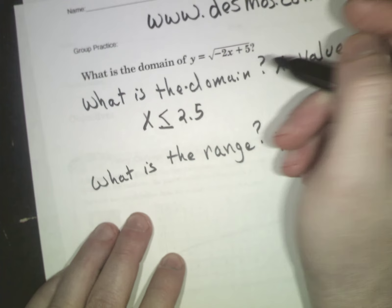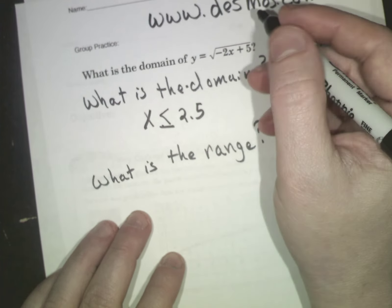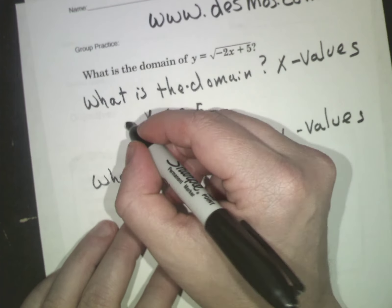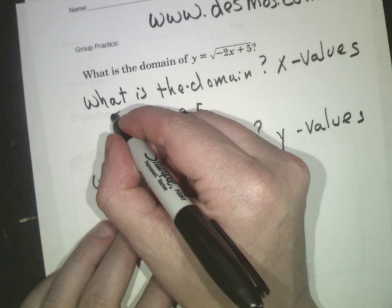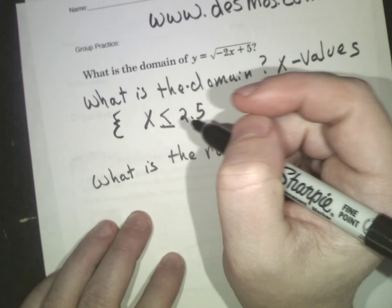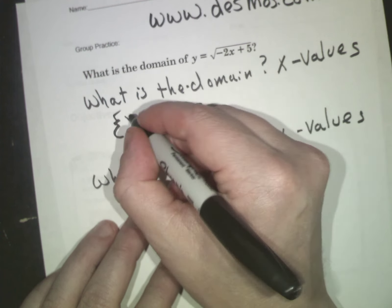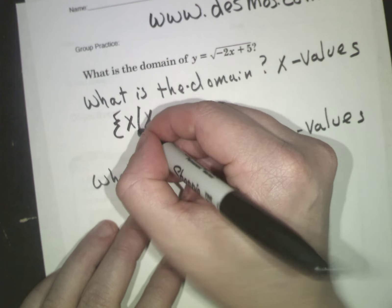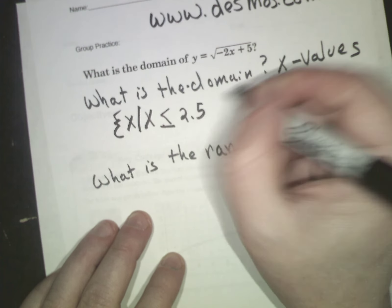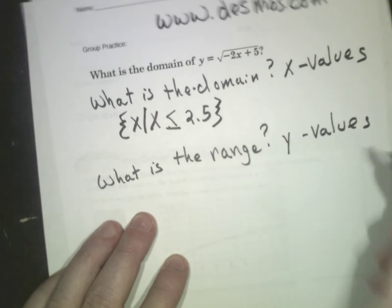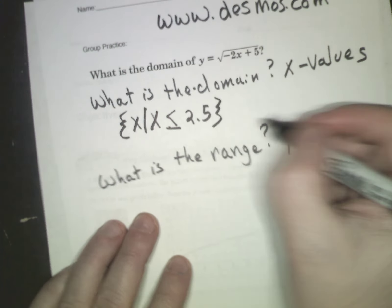That's just it right there. The work is essentially done. The only other thing is they like it in the roster form. So I basically put a bracket there and say the variable x is less than or equal to 2.5, close bracket. So the domain equals that.